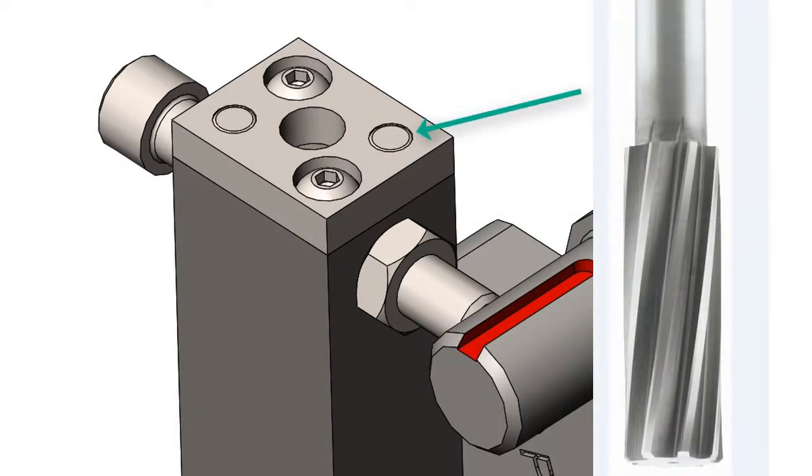When a tight diameter tolerance such as that for a dowel pin is required, it is often drilled 1/64th to 1/32nd of an inch smaller than the final size, and then a reamer is used to bring the hole to its final size.